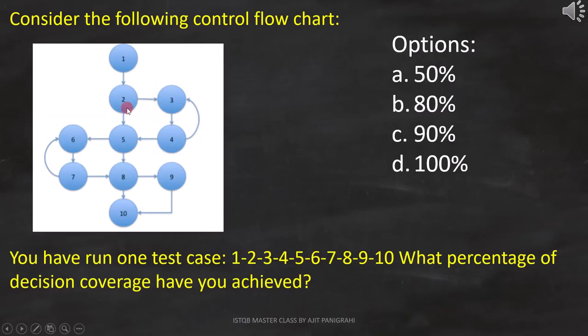Here, the question is, consider the following control flowchart. You have run one test case: 1, 2, 3, 4, 5, 6, 7, 8, 9, 10. What percentage of decision coverage have you achieved?